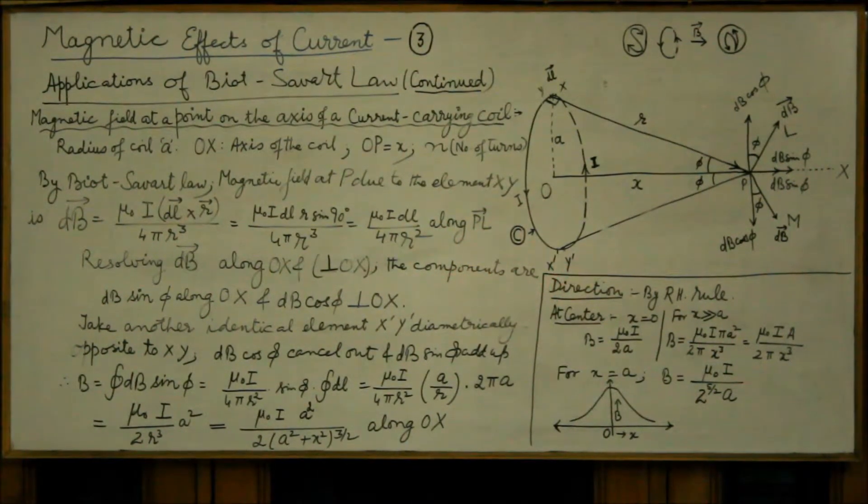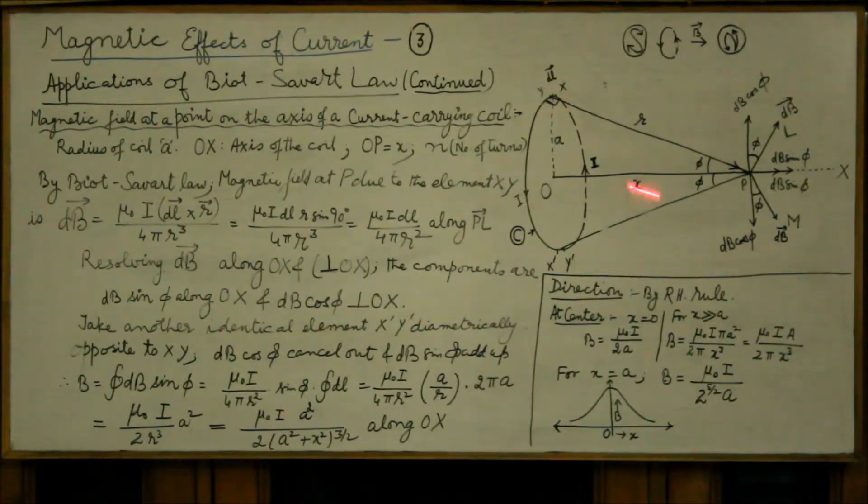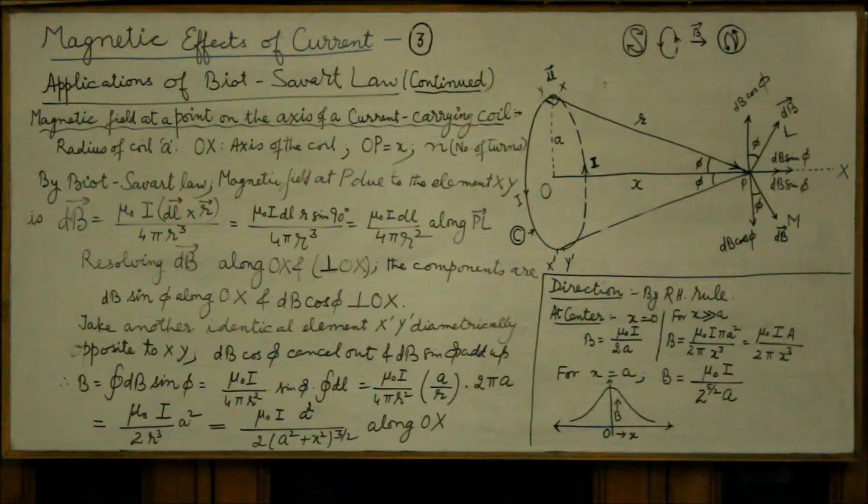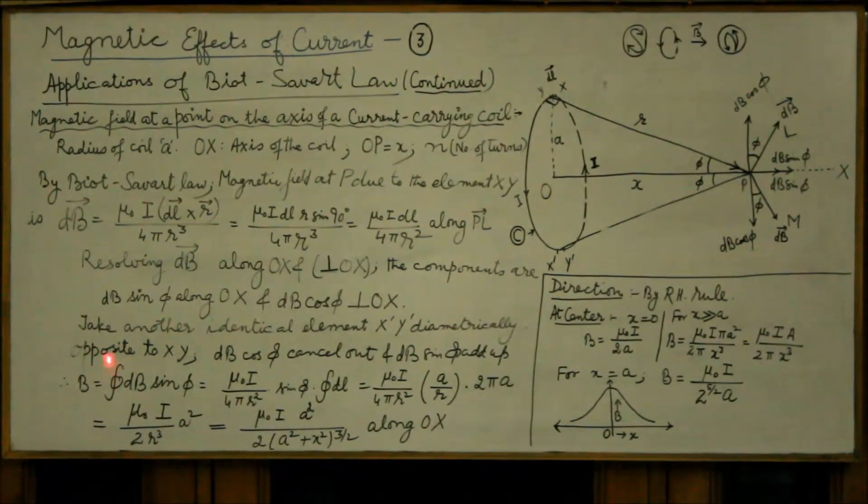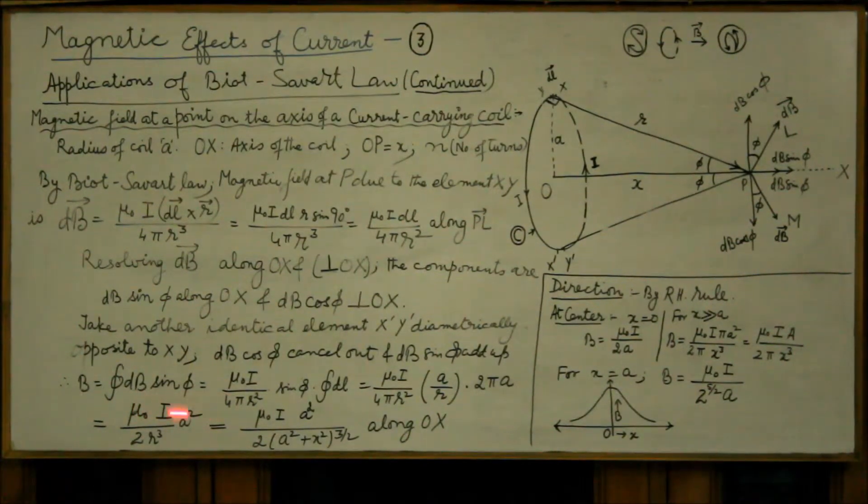In order to get field due to the entire coil we have to integrate dB sin φ components because dB cos φ components do not make any contribution leading you to magnetic field B as integral of dB sin φ.